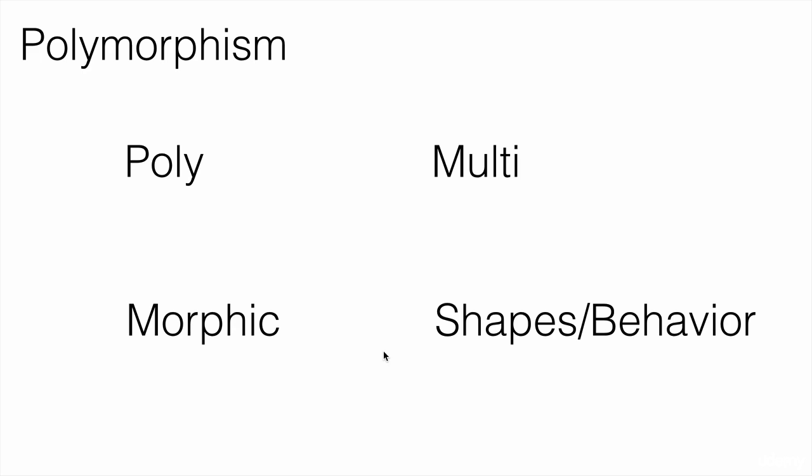So if an object can take different shapes and behave differently when other objects access it at different points in time, then that is called polymorphism.